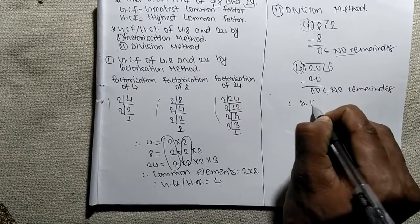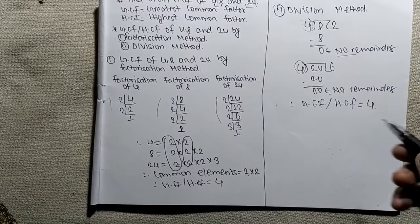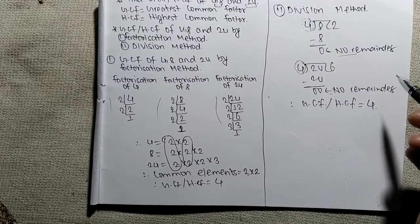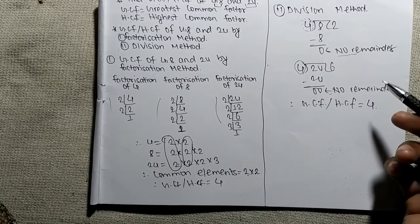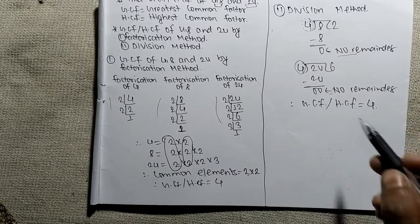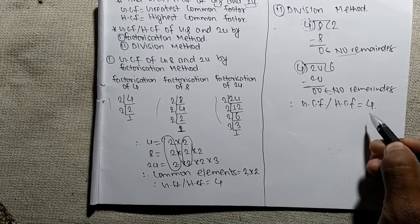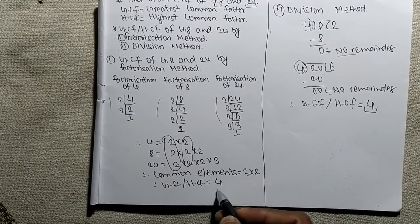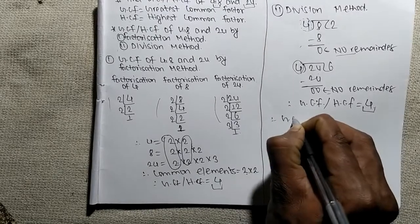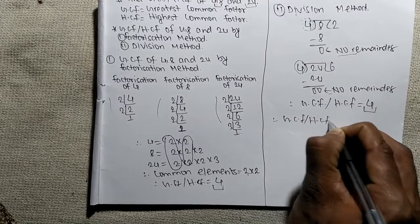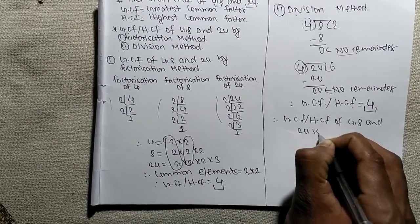Therefore we can say GCF or HCF is equal to 4, because in both cases it is leaving no remainder at last. While finding GCF or HCF by division method, the divisor containing no remainder at last becomes the GCF or HCF. So GCF or HCF is equal to 4. In both the division method and factorization method, GCF is 4 — the result is the same. Therefore, GCF or HCF of 4, 8 and 24 is 4.